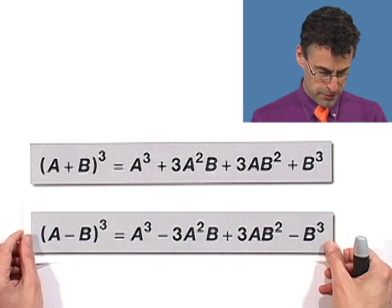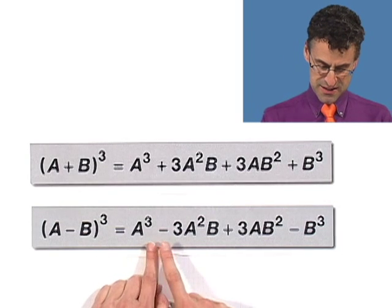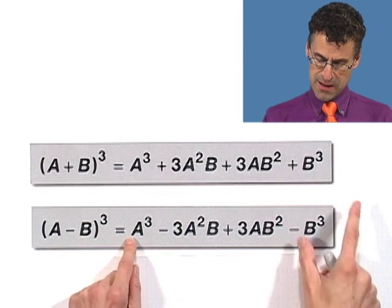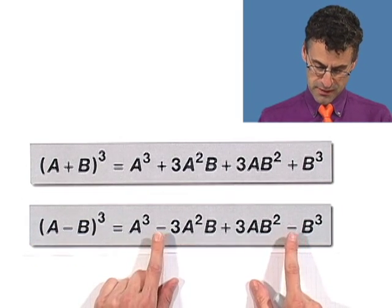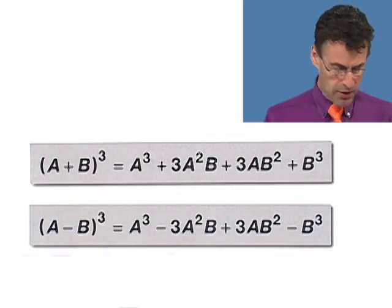There's a similar formula if you have a minus b cubed. Notice the pattern of the signs: plus sign here, then minus, then plus, then minus. So it's the exact same formula, except every other sign becomes negative. That's the only difference.